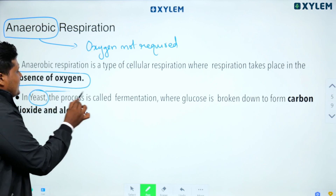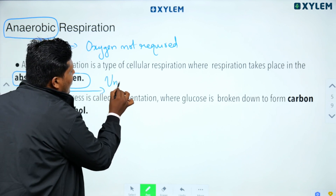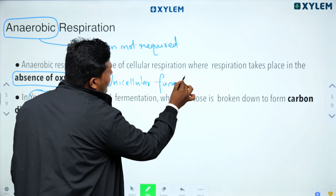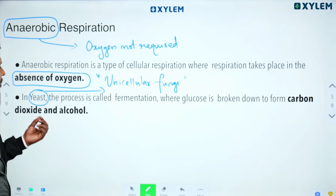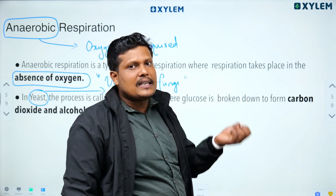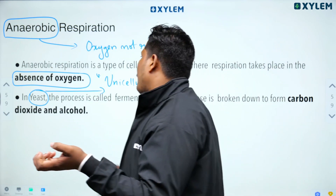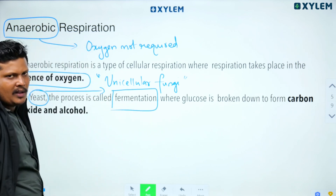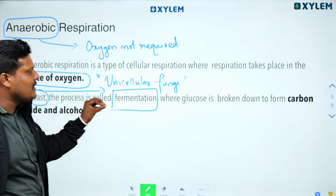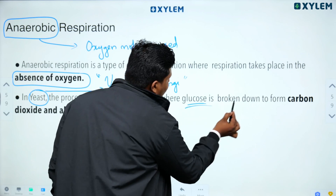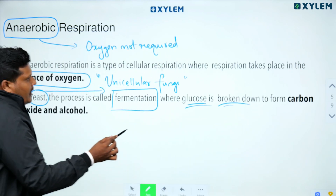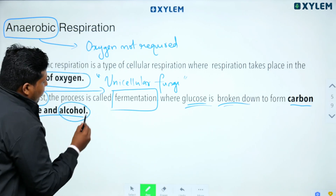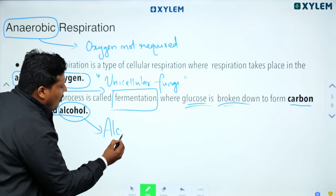Anaerobic respiration occurs in unicellular fungi such as yeast. Yeast undergoes anaerobic respiration, also called fermentation. In this process, glucose is broken down to produce carbon dioxide and ethanol — this is called alcoholic fermentation.